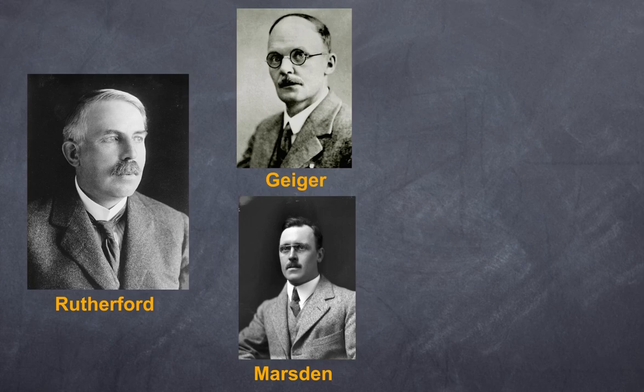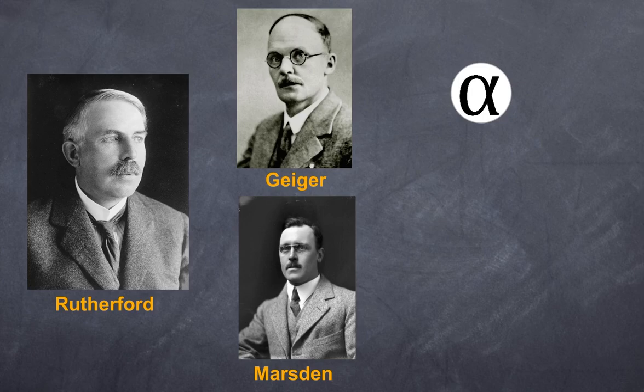Now what wasn't known at the time was what an alpha particle was, except that it was a large particle with a positive charge. When firing these alpha particles through a gas, they discovered that often the alpha particles were deflected by the molecules. He was particularly interested in determining the charge to mass ratio, so he got Geiger and Marsden, who was an undergrad student, to set up an experiment to fire these alpha particles at some gold foil and to see how the gold foil deflected the alpha particles. These experiments were done between 1908 and 1913.